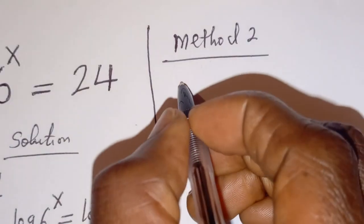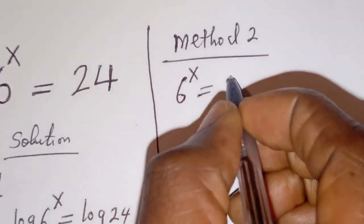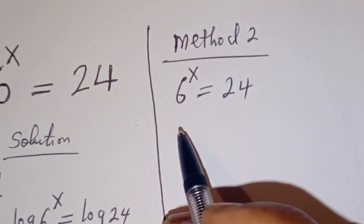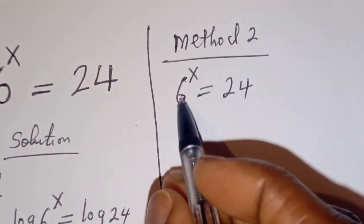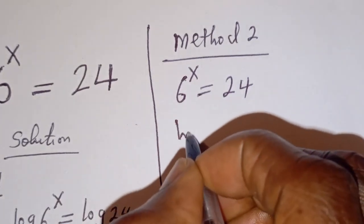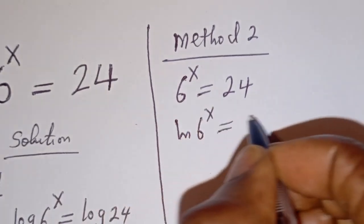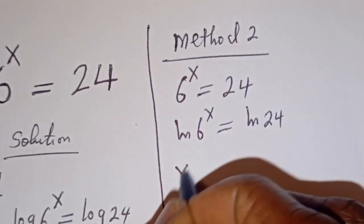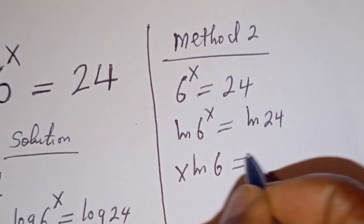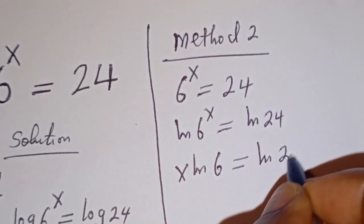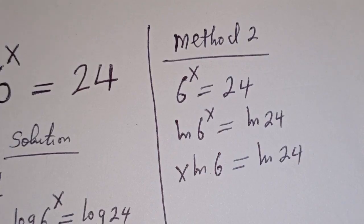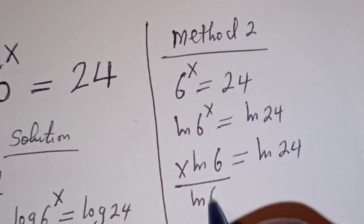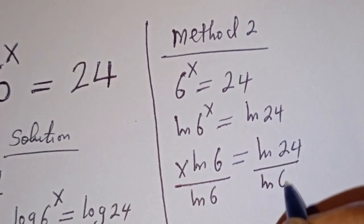From the second method, we have 6 to the power of x is equal to 24. Here we can use our calculator, whereas the first method you can solve without a calculator. Let's take the natural log of both sides: ln of 6 to the power of x is equal to ln of 24. This can be written as x ln of 6 is equal to ln of 24. Let's divide both sides by ln of 6 — this divided by ln of 6 and this divided by ln of 6. This will cancel.